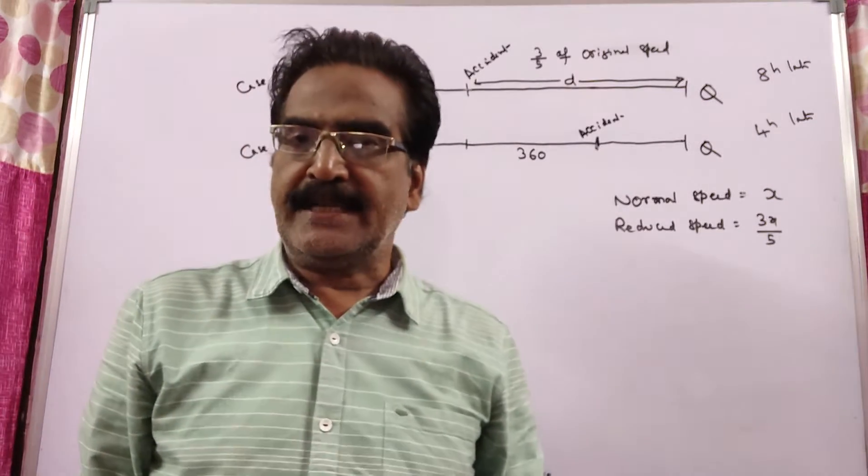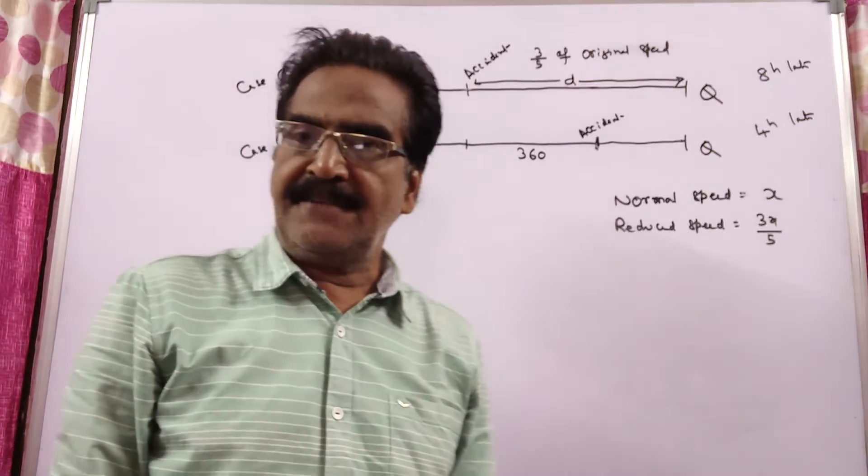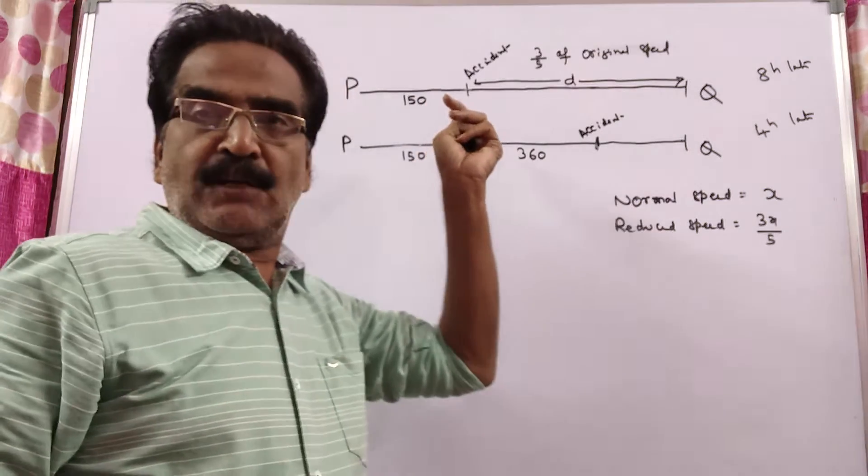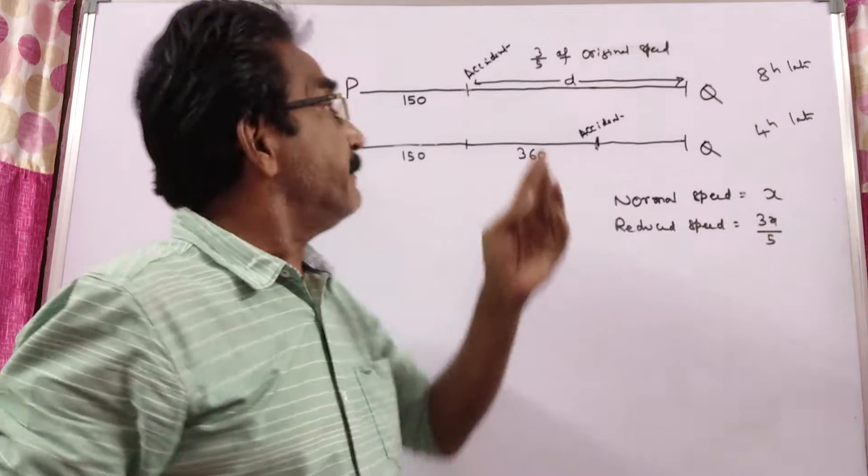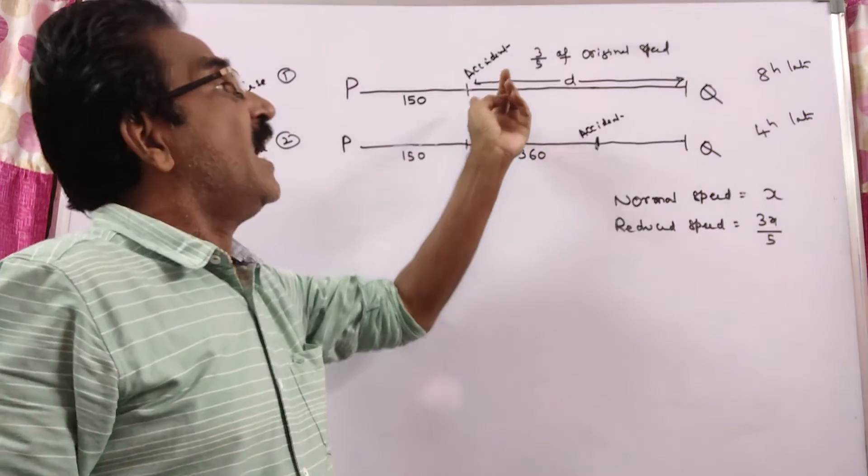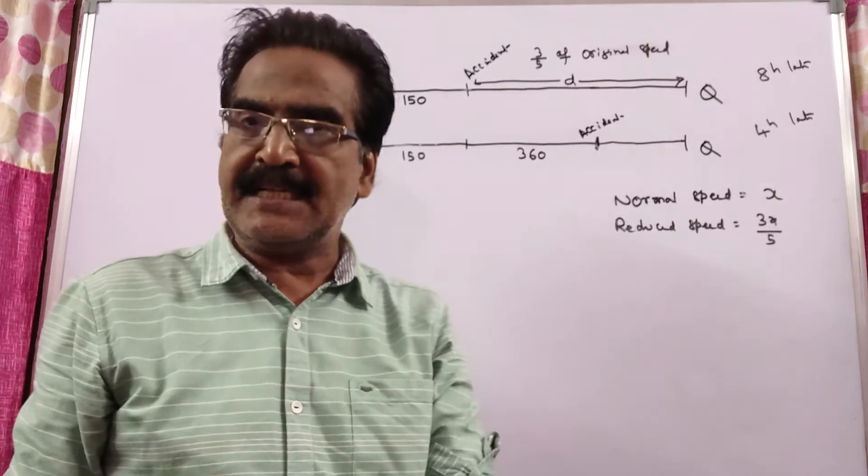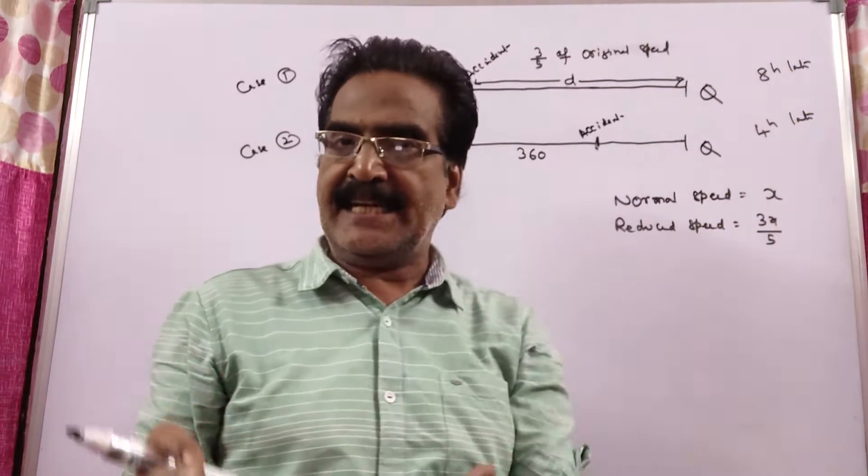Hi friends, good morning. Please look at the next problem in your trains. See friends, after travelling 150 km, a train meets with an accident and thereafter it travelled at 3/5 of its original speed and reached 8 hours late.